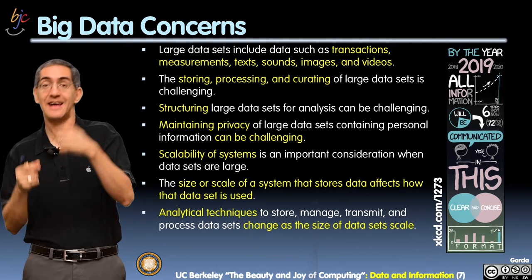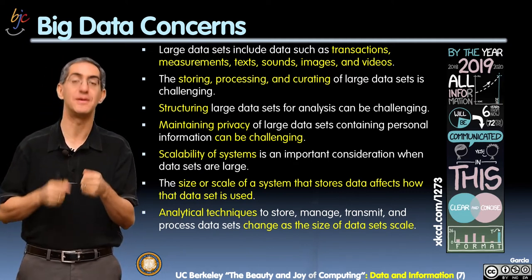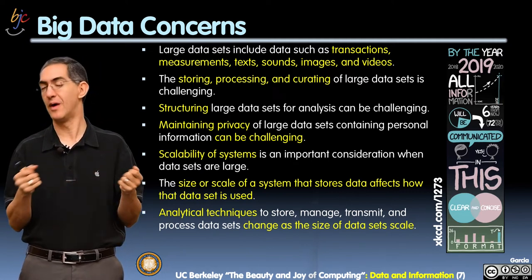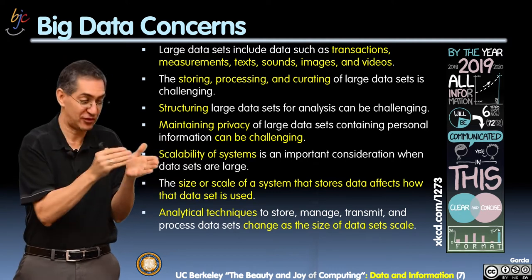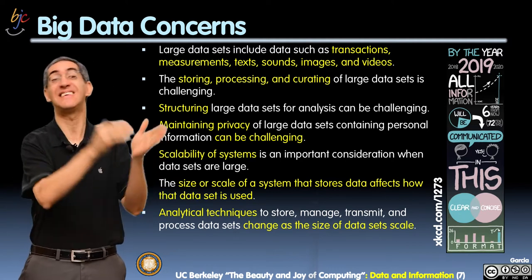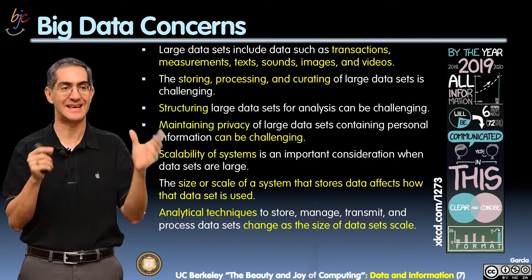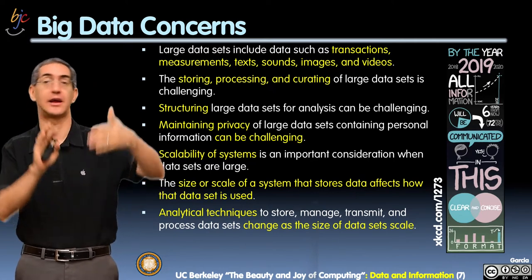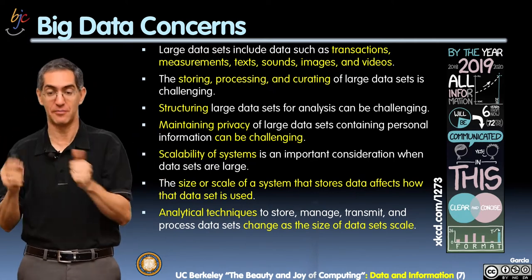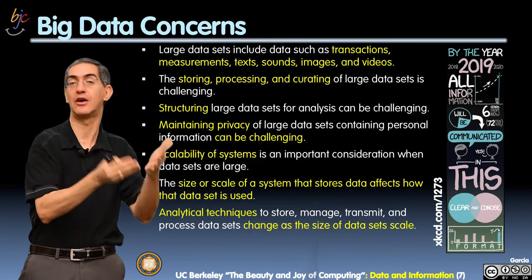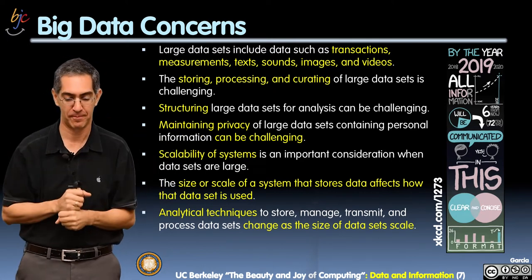The size and scale of a system that stores data affects how it's being used. A system that works really fast for small data but really slow for big data means you can't take a huge file, like a movie file, and put it on that system — it can't handle large data. So size and scale directly affects how the system is used.